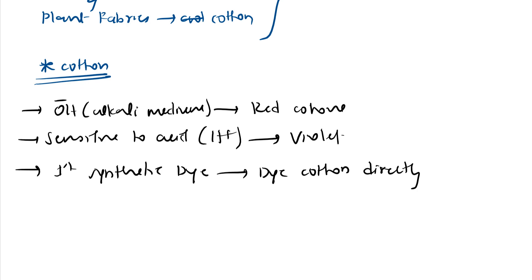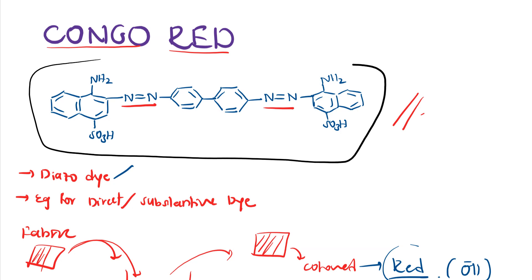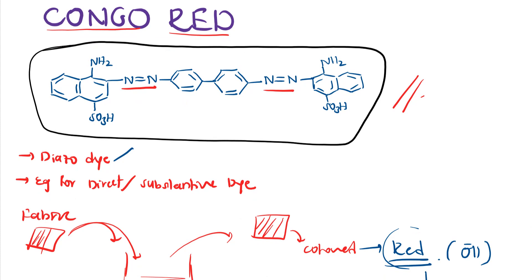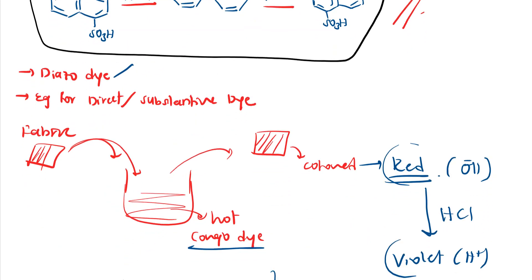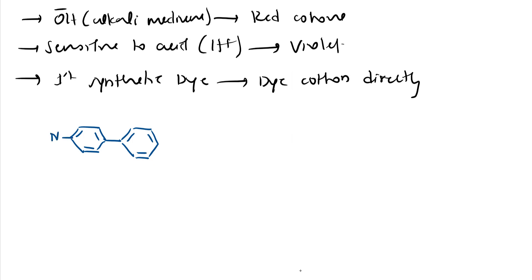Now let us look at the structure and synthesis of Congo red. To synthesize it, we start with a biphenyl-based compound. We add azo (diazo) groups — N≡N⁺ Cl⁻ — on each end of the biphenyl, giving us the compound called azotobenzidine (bisdiazotized benzidine).